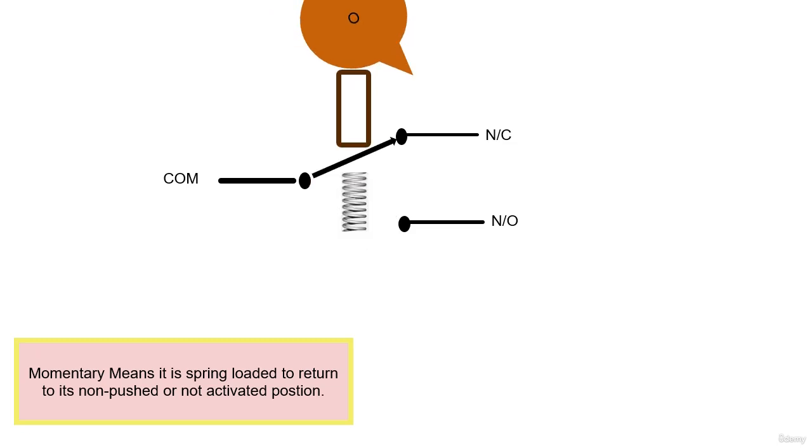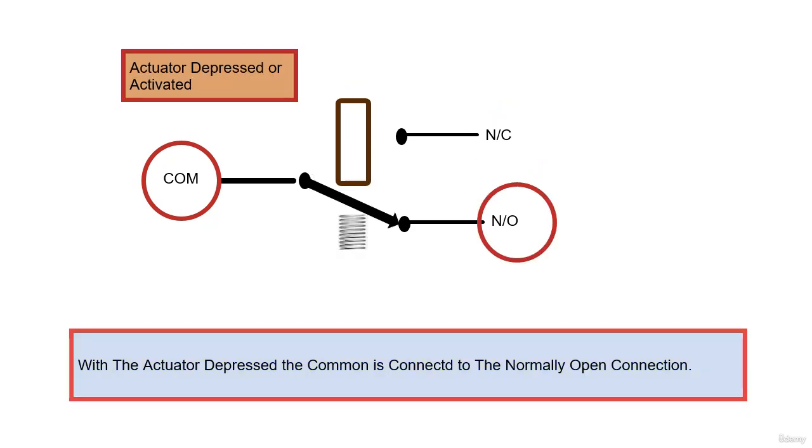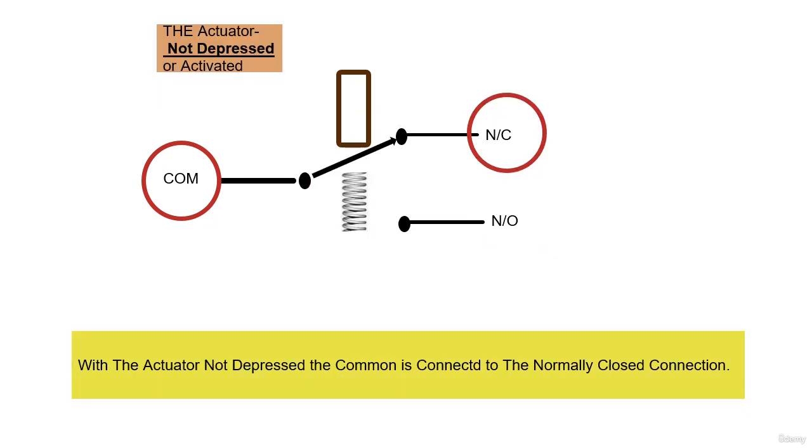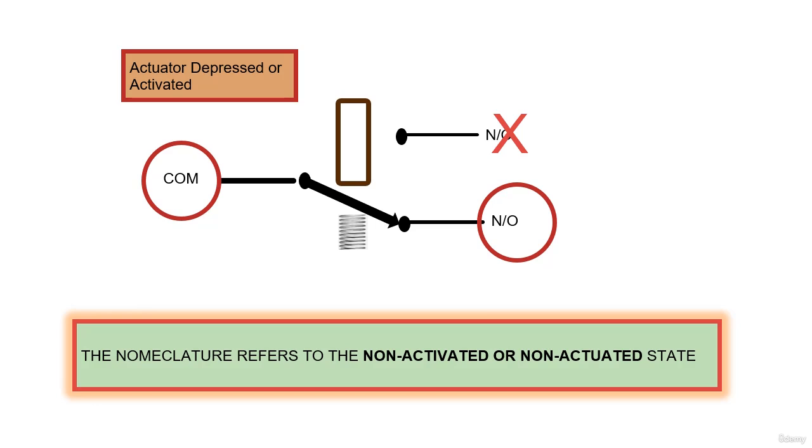On the terminal connections, common means it connects to the other two terminals depending on the position of the actuator. With the actuator not depressed, the normally closed is connected to the common. With the actuator not depressed, the normally open is not connected to the common. When we depress the actuator, now the normally open is closed and connected to the common, and the normally closed is open and not connected to the common.